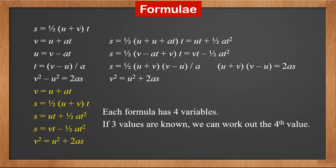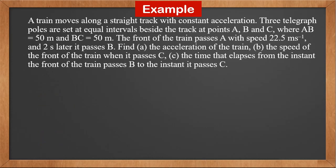Now we have these 5 formulas. Each formula has 4 variables. If 3 values are known, we can work out the 4th value. A train moves along a straight track with constant acceleration. Three telegraph poles are set at equal intervals beside the track at points A, B, and C, where AB is 50 meters and BC is 50 meters. The front of the train passes A with speed 22.5 meters per second, and 2 seconds later it passes B. Find: A — the acceleration of the train; B — the speed of the front of the train when it passes C; C — the time that elapses from the instant the front passes B to the instant it passes C.